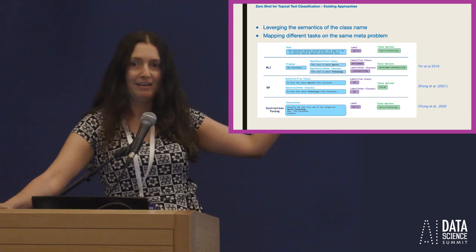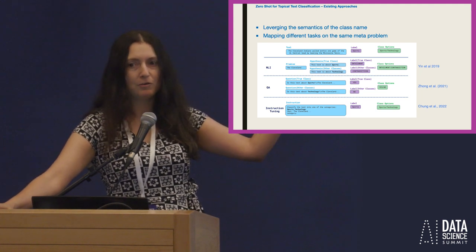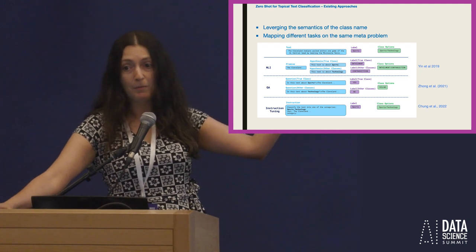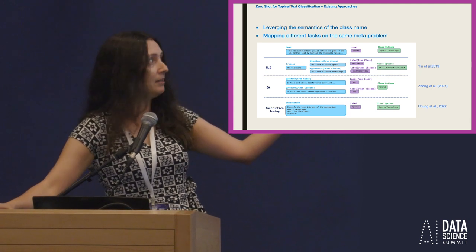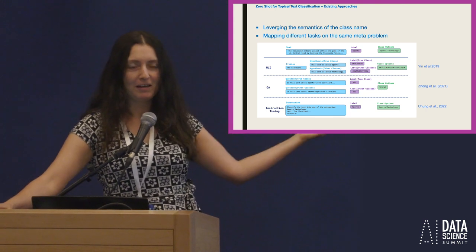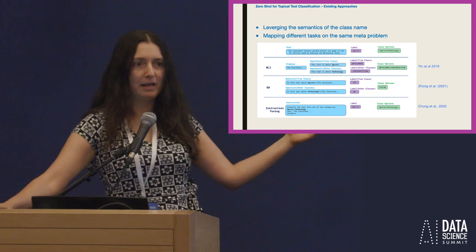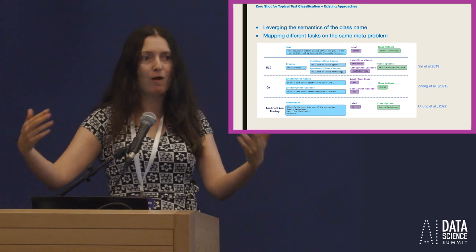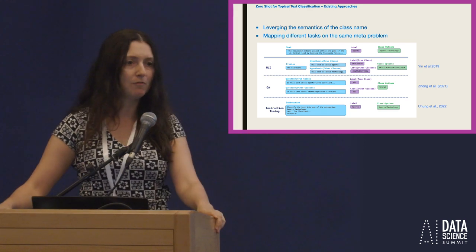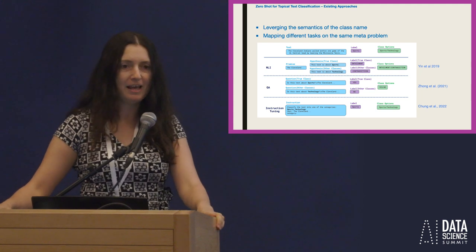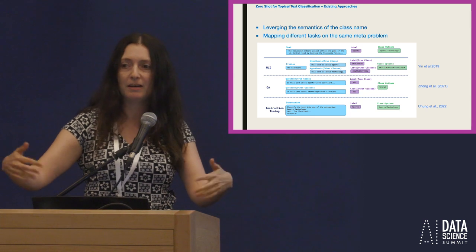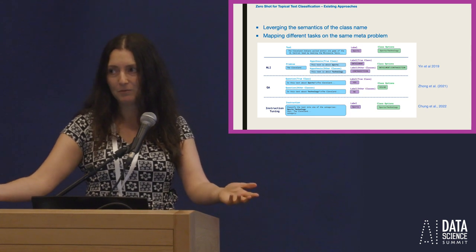The same can be done for question answering: different tasks can be described as a QA problem — 'is this text about sports? yes or no?' — so a model trained for question answering can perform topical text classification. With instruction tuning, the task is described as an instruction, and a model trained to follow instructions can classify text into topics.